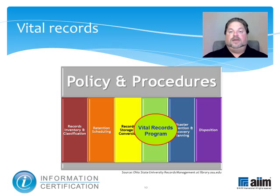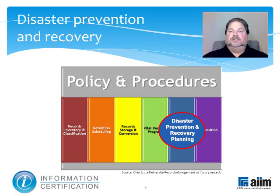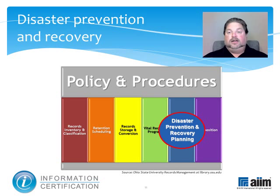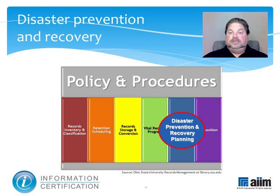Vital records should be identified as an integral part of a disaster recovery plan for business continuity. Disaster prevention safeguards are included in records management procedures and applications that can protect records by adding a unique identifier as metadata, safeguarding against unauthorized editing or deletion, and providing an audit trail of any authorized changes to a record, its metadata, or system settings. Properly executed disaster prevention policies and procedures can forestall or eliminate altogether the events that necessitate disaster recovery.